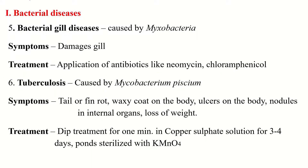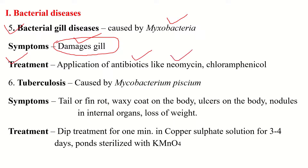The fifth bacterial disease is Bacterial Gill Disease, caused by Myxobacteria. The main symptom is damaged gills, as this disease attacks and damages the gill tissue. Treatment involves application of antibiotics like Neomycin and chloramphenicol, which may be useful in treating Bacterial Gill Disease in fish.